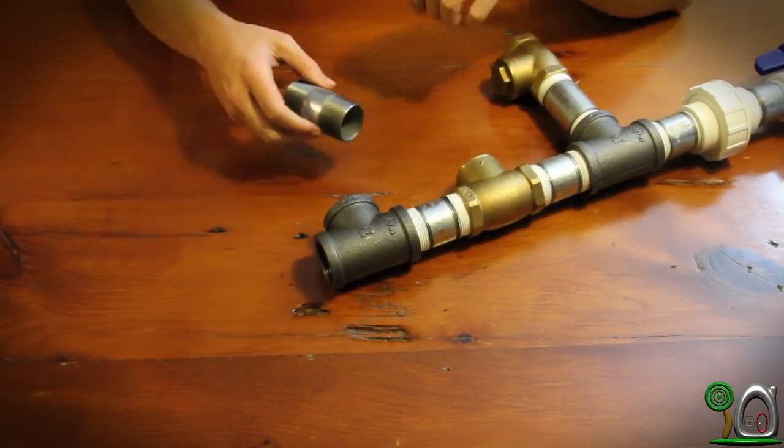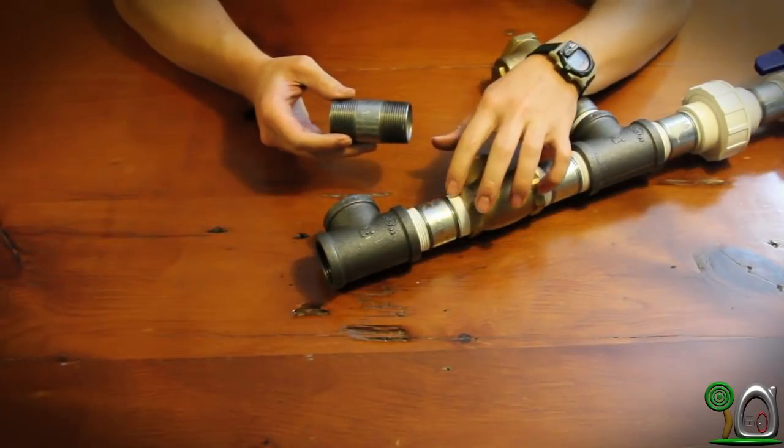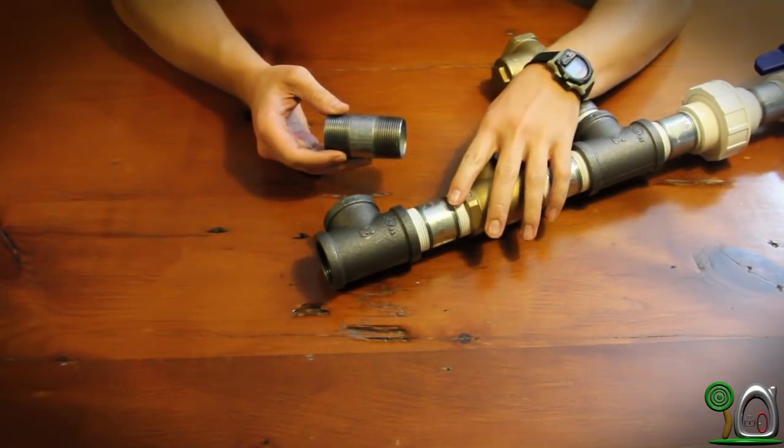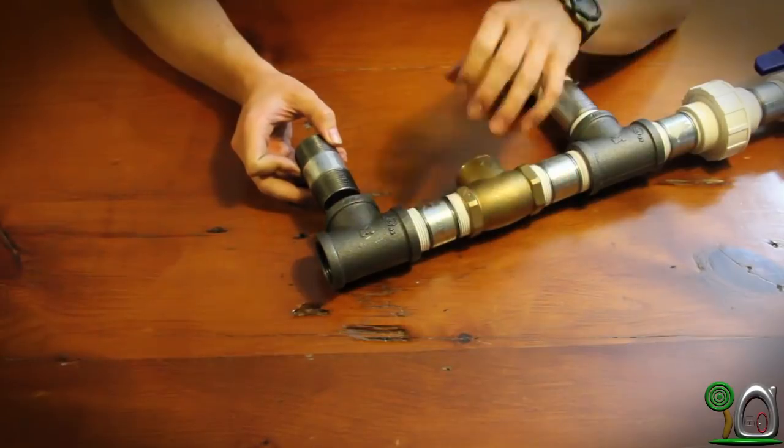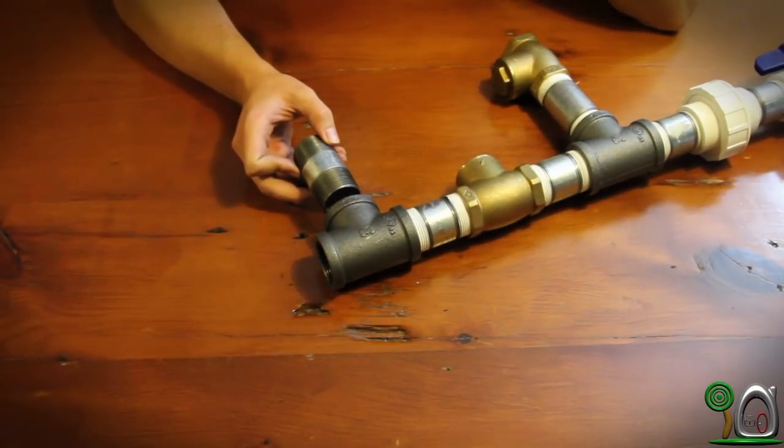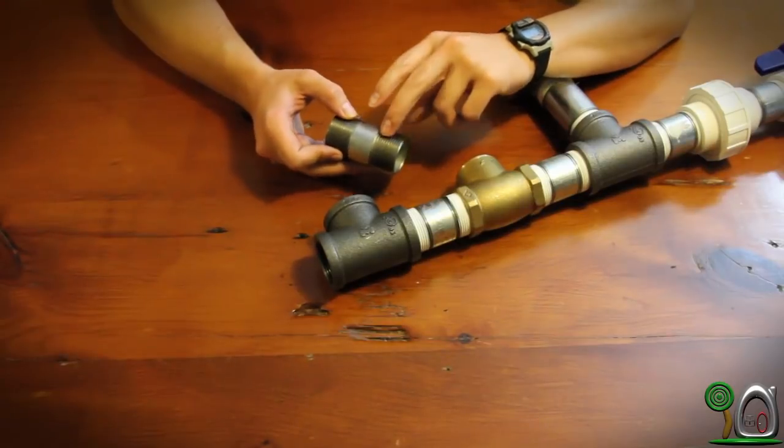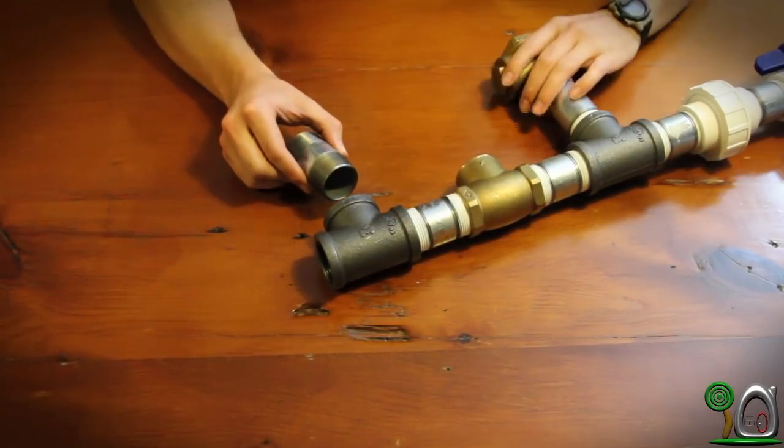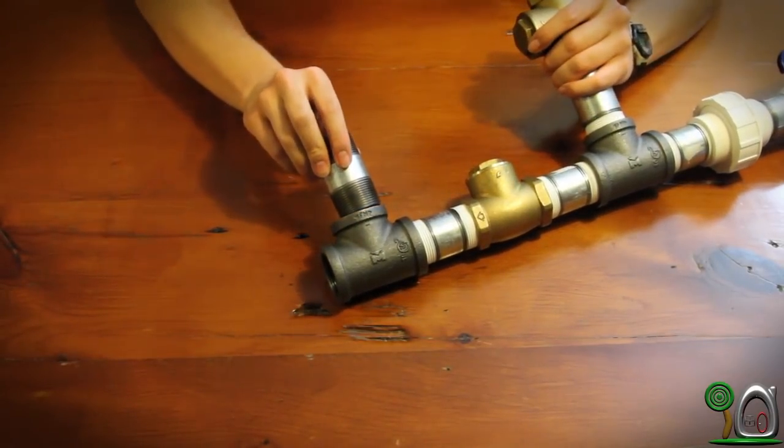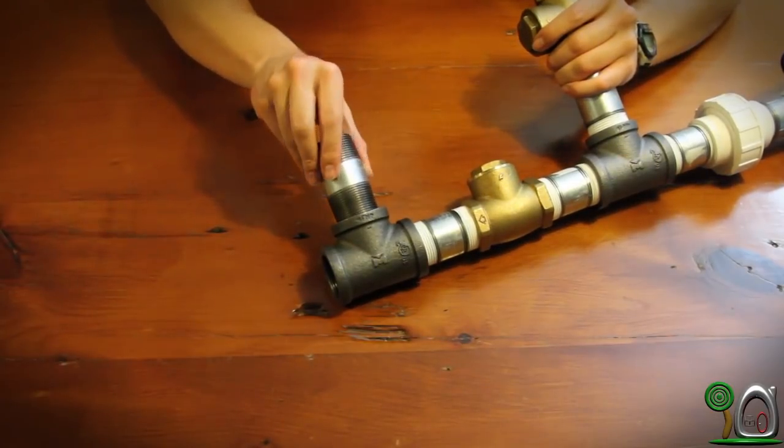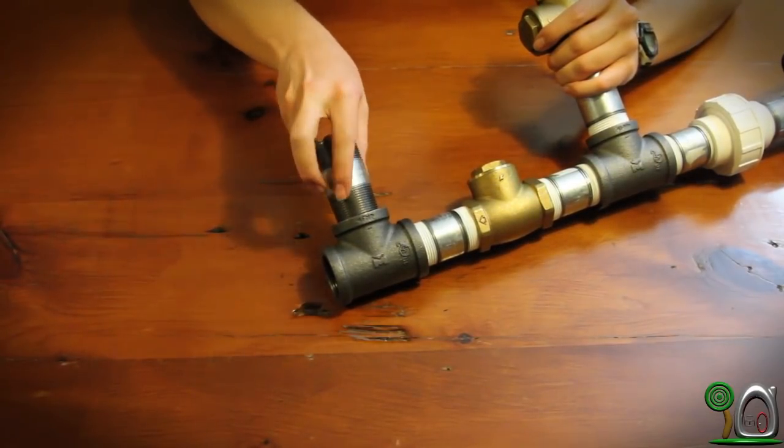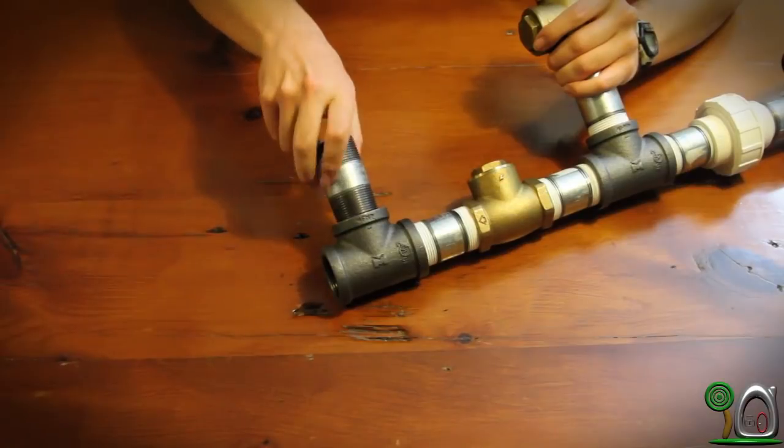Step 12. Now I ran out of Teflon tape, but I'm going to continue with the build just to show you what to do. But you're going to want to make sure that all pipe has Teflon tape on it. So from the top of the T, go ahead and screw in your pipe nipple.